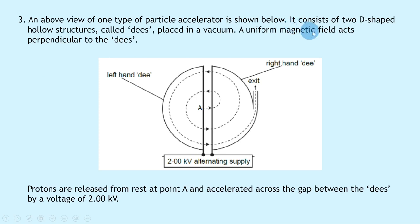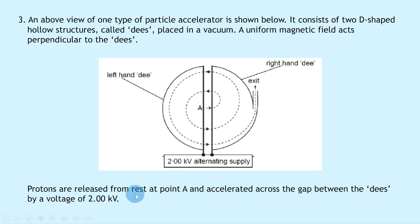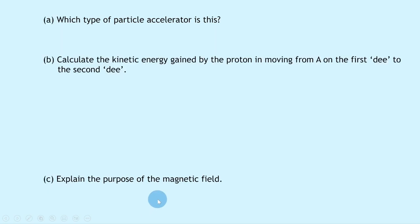Question three shows an above view of one type of particle accelerator consisting of two D-shaped hollow structures called Dees placed in a vacuum, with a uniform magnetic field acting perpendicular to the Dees. There is a 2.00 kilovolt alternating supply. Protons are released from rest at point A and accelerated across the gap between the Dees by a voltage of 2.00 kilovolts. Part (a) asks which type of accelerator this is — because we have the two D-shapes, this is a cyclotron.